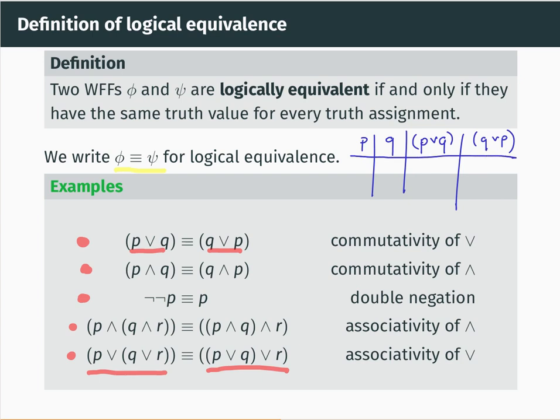Let's do a couple of rows. When P and Q are both true, P or Q gets the value true and Q or P gets the value true — the last two columns are the same. When P is true and Q is false, P or Q is true and Q or P is true — again the same. If you continue this for every truth assignment to P and Q, you get the same value in the P or Q column as in the Q or P column. The fact that those two columns look identical tells you those two formulas are logically equivalent. You can check you get the same property for all the other claimed logical equivalences as well.